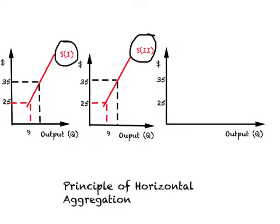Based on S1 and S2, we can plot a combined supply curve for both firms. When the price is $25, firm one is willing to sell nine units of output to the market, and likewise the second firm at $25 is willing to sell nine units. Combined, both firms will sell 18 units of output to the market at $25 — this becomes the first point on the combined supply curve.